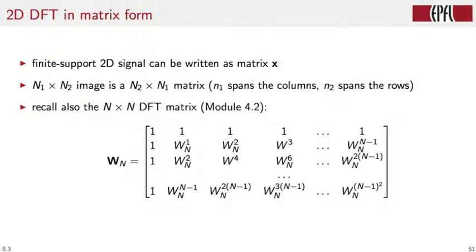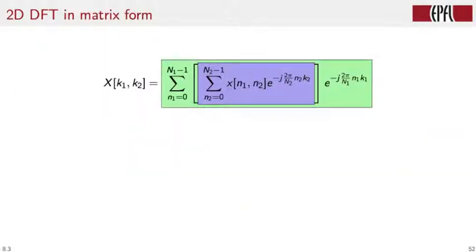But this is just a technicality. You will also recall the N times N DFT matrix that we saw in module 4.2. This is a standard DFT matrix of size N, where W, recall, is simply e to the minus j 2 pi over capital N. With this notation in place,